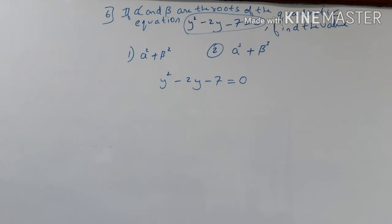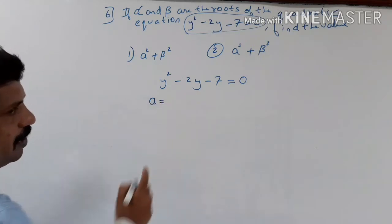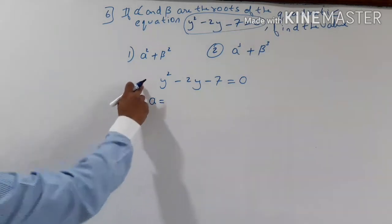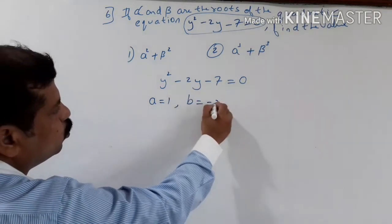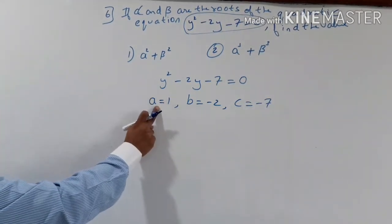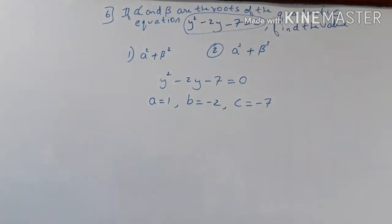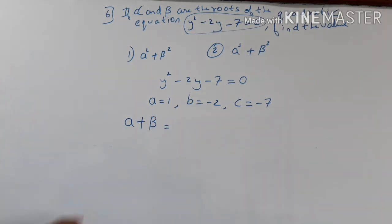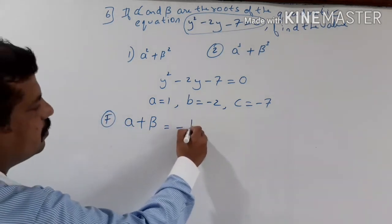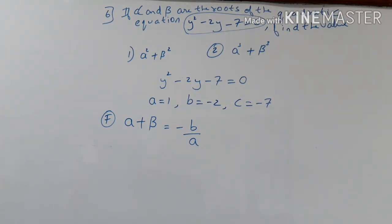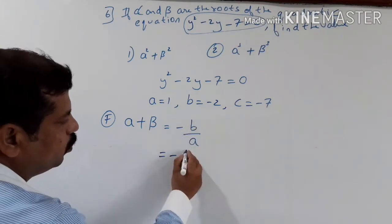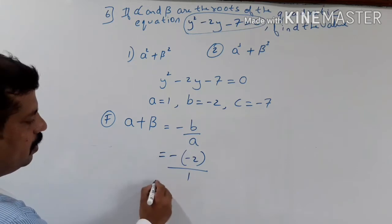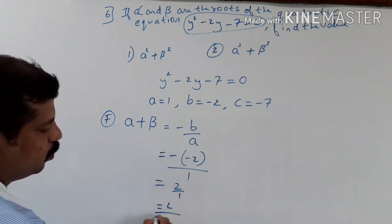If alpha and beta are the roots of the quadratic equation, compare with standard form. A value is 1, B value is minus 2, and C value is minus 7. Alpha plus beta equals minus b upon a, which is minus of minus 2 upon 1, equals 2.